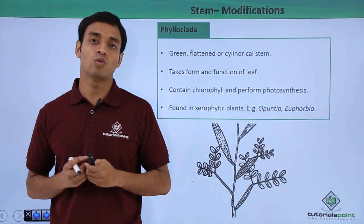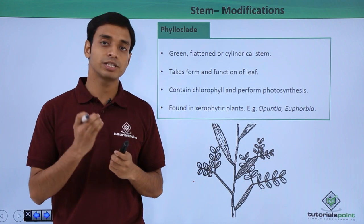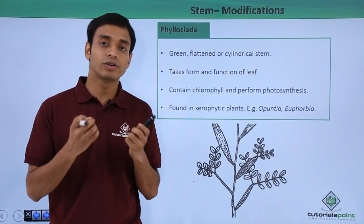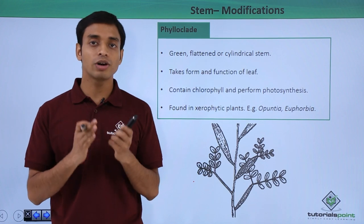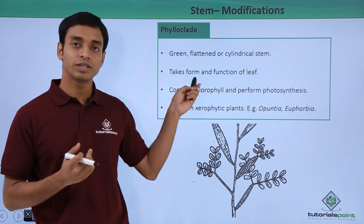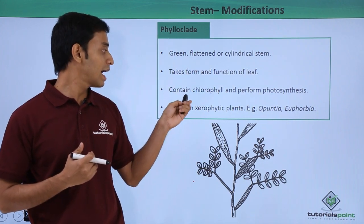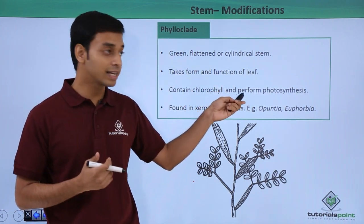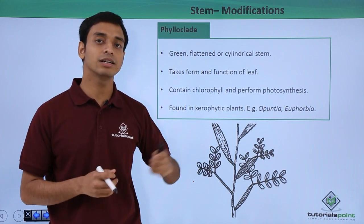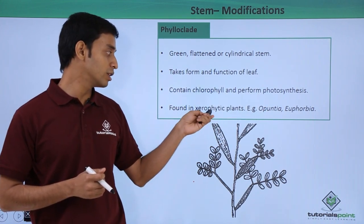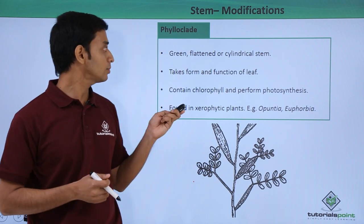In a xerophytic environment, water availability is less. If the plants had leaves, the presence of stomata would result in water loss due to transpiration. To avoid this, the stem gets modified into a leaf-like structure that contains chlorophyll and can perform photosynthesis without water loss. Examples are Opuntia and Euphorbia.